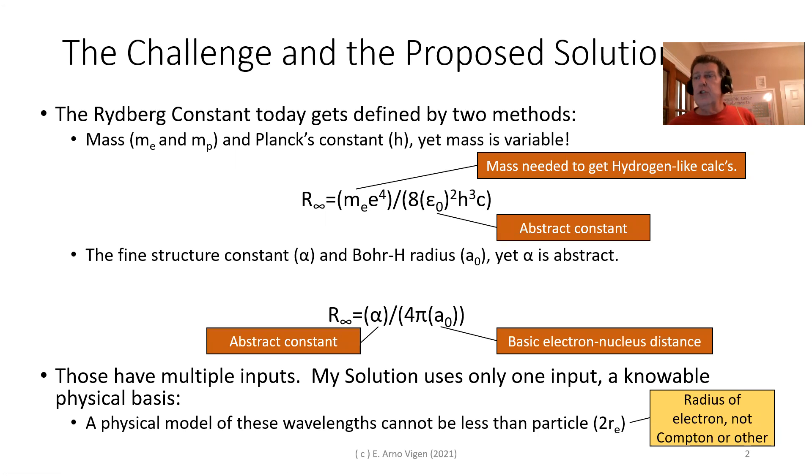Here's the two existing ways. It has a lot of factors in it. Rydberg infinity is the mass of electron times the charge of an electron to the fourth power, and then we have this abstract constant, which is the electric constant, then we have Planck's constant to the cube and the speed of light. That's a lot of factors. And it's true that eventually you get that, but understand there's another one.